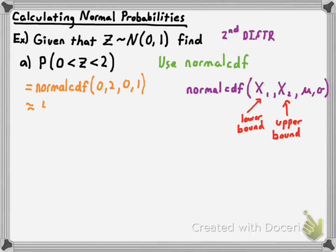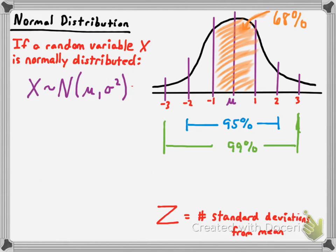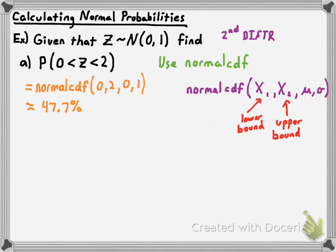That turns out to be about 47.7%. Let me put this in perspective based on things we've already talked about. I'm basically saying that 47.7% of the values are between zero and two standard deviations away from the mean — because if the standard deviation is one, this means two standard deviations away. Didn't we say that 95% of the data values were within two standard deviations of the mean? We're talking about just this half of that, so it makes sense that it would be about 47.5% — we said 47.7% actually. So that does tie into what I've already taught you.